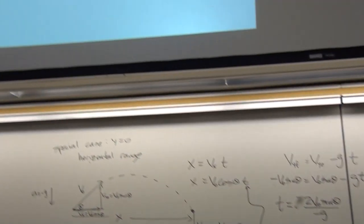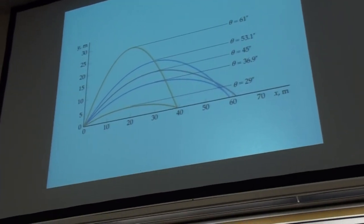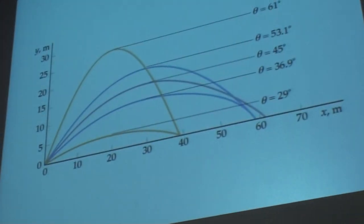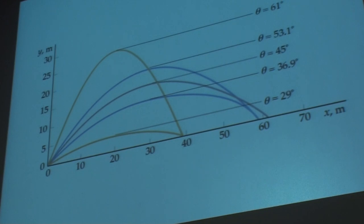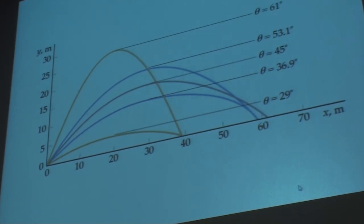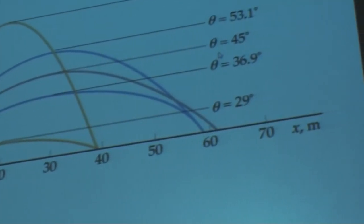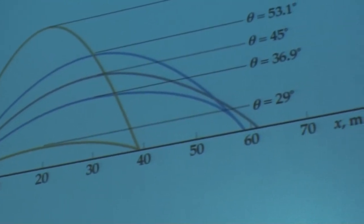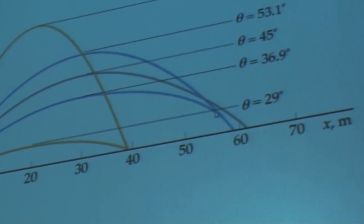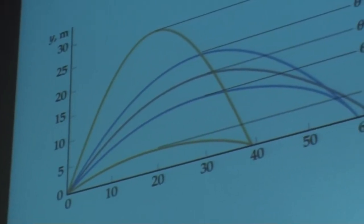So if you were going to fire something and you want that object to land at the same height from which it was released, you would want the angle to be 45 degrees — that gives you your maximum horizontal range.